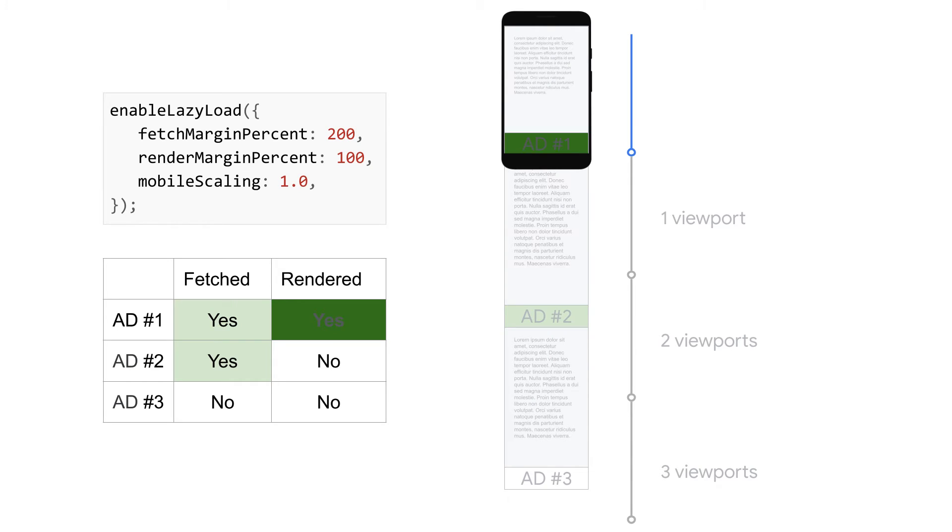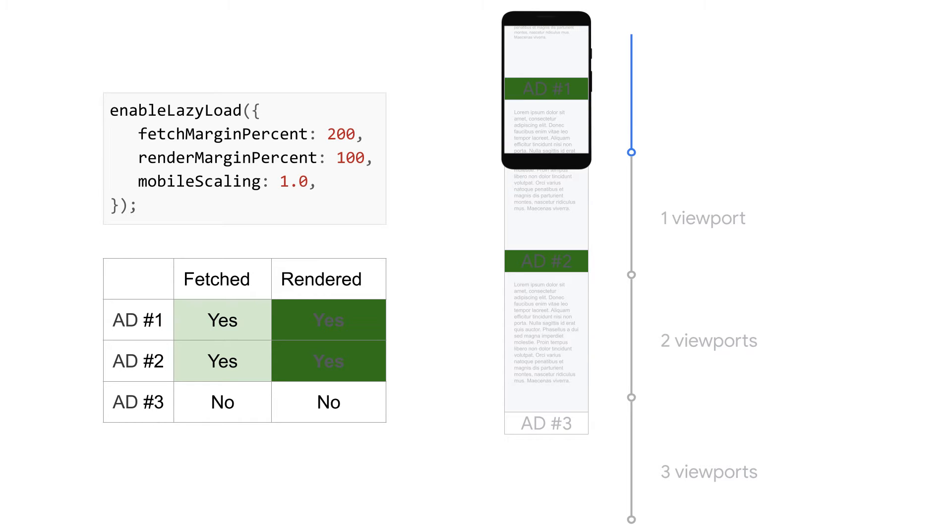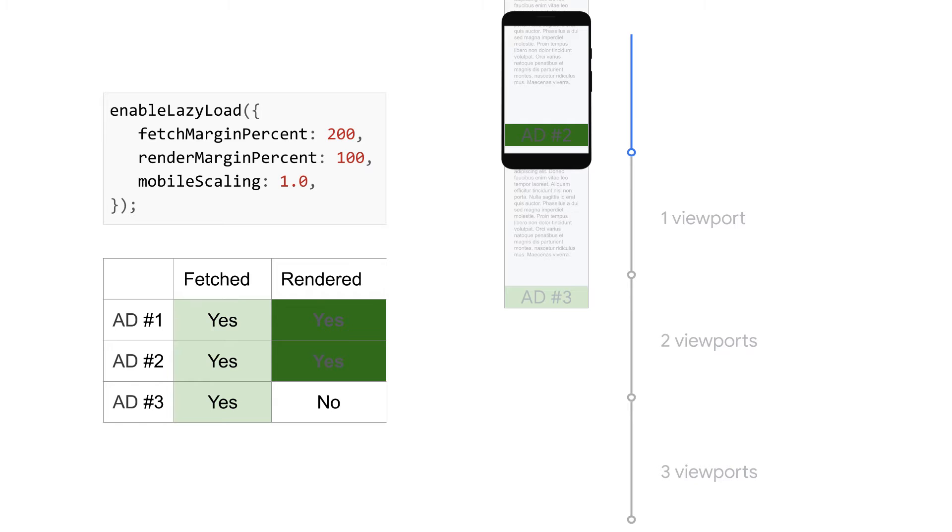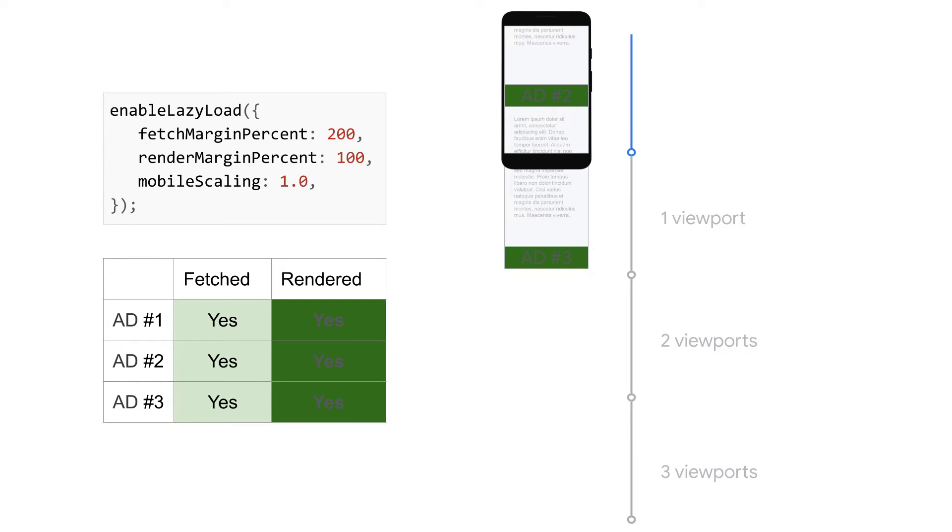Let's talk a bit more about what these settings mean in practice, how they work and how you can optimize them. This is how our implemented code will work in practice, shown here on a mobile viewport. As we scroll down the web page, you can see how ads are being requested when they're 2 viewports away and rendering when they're 1 viewport away. So, they're ready when they enter the viewport.